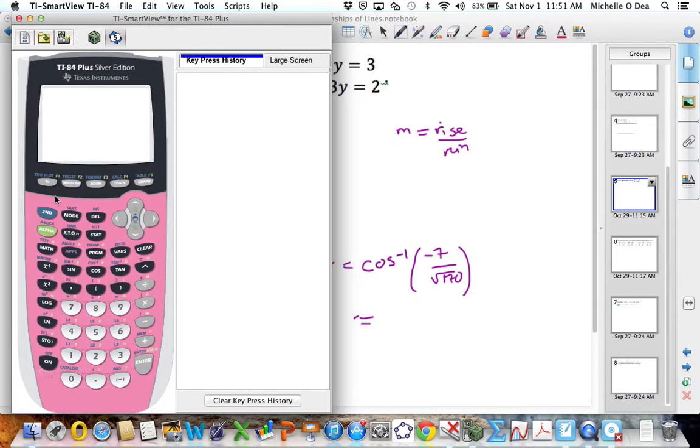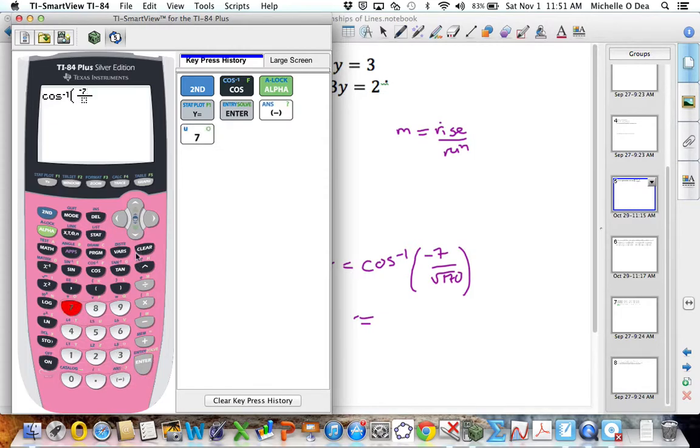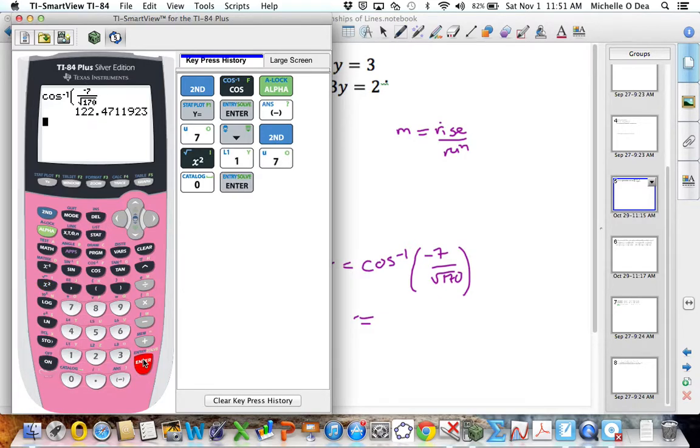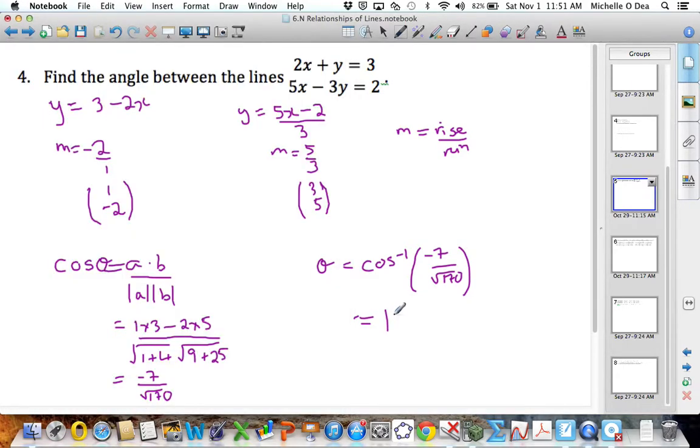So I want inverse cos of the fraction minus 7 over the square root of 170, and we get 122 degrees to three significant figures. Okay, hope that was of some help, bye.